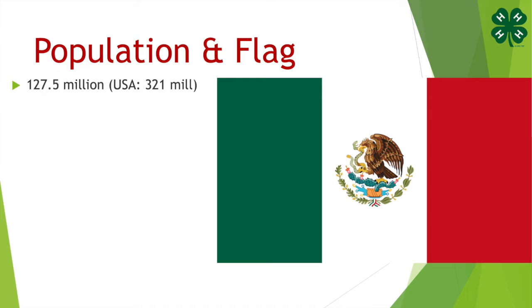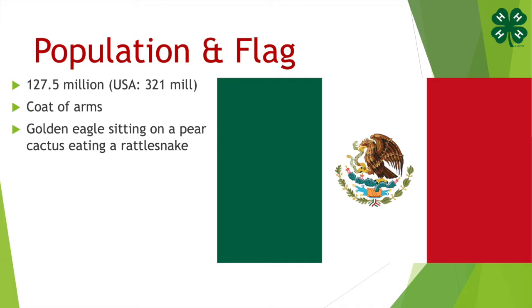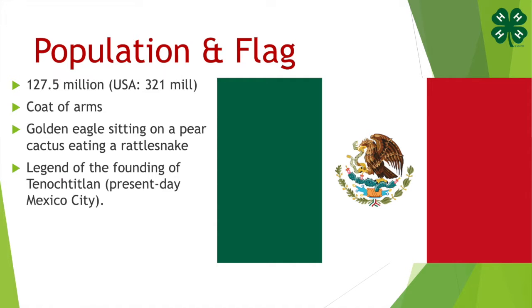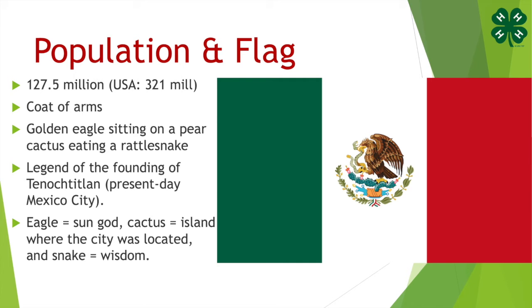This is the flag of Mexico. The population of Mexico is 127.5 million; in the United States it's 321 million. The symbol on the flag is the Mexican coat of arms — a golden eagle sitting on a pear cactus eating a rattlesnake. This picture relates to the legend of the founding of Tenochtitlan, or present-day Mexico City. The eagle represents the sun god, the cactus represents the island where the city was located, and the snake stands for wisdom.